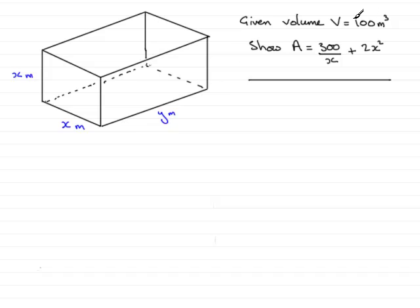We're also told that the volume, the capacity, is 100 cubic meters, and asked to show that the surface area A of metal used to make this cuboid is given by 300 over x plus 2x squared.